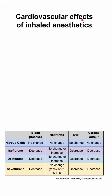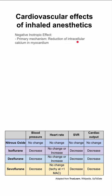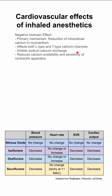These are the cardiovascular effects of inhaled anesthetics. Inhaled anesthetics have a negative inotropic effect. Their primary mechanism is reduction of intracellular calcium in the myocardium. They affect both the L-type and the T-type calcium channels, and they inhibit the sodium-calcium exchanger. They reduce the calcium availability inside the cells and thus reduce the sensitivity of the contractile apparatus.